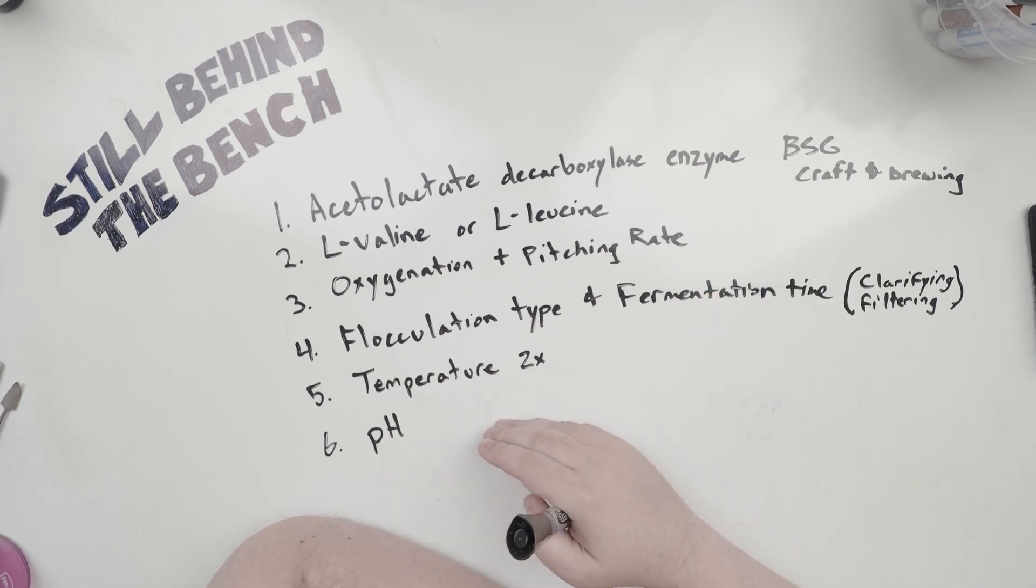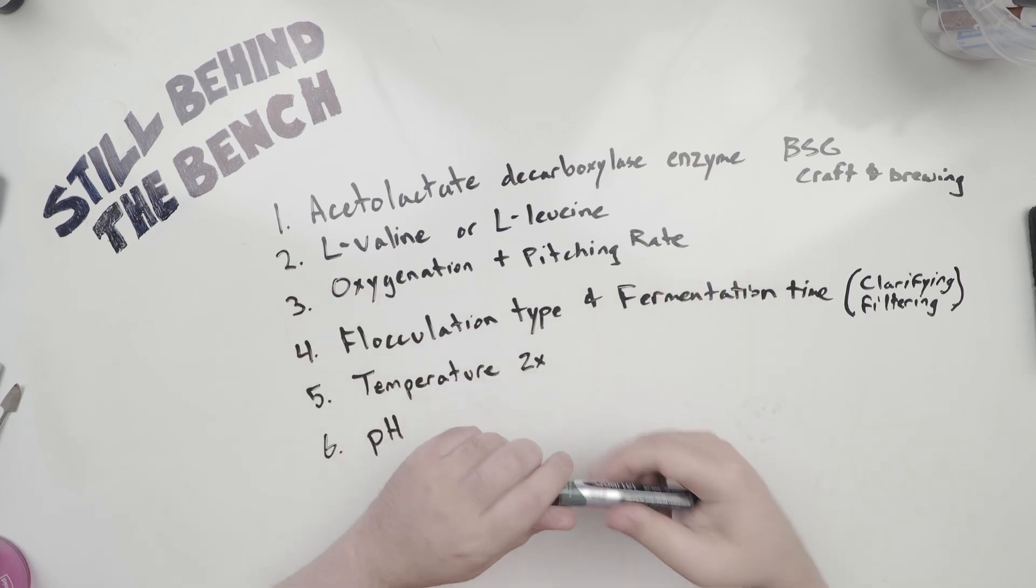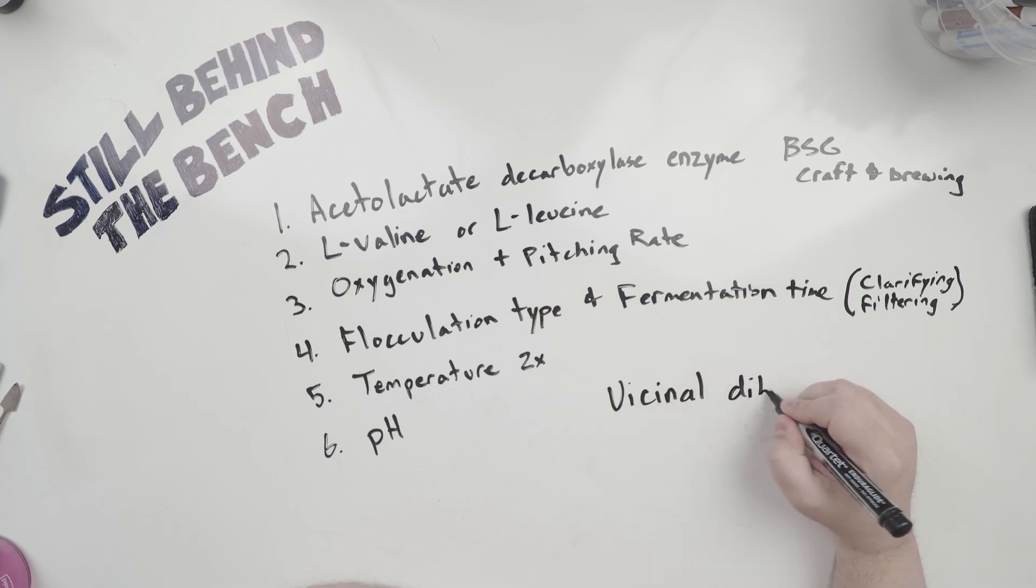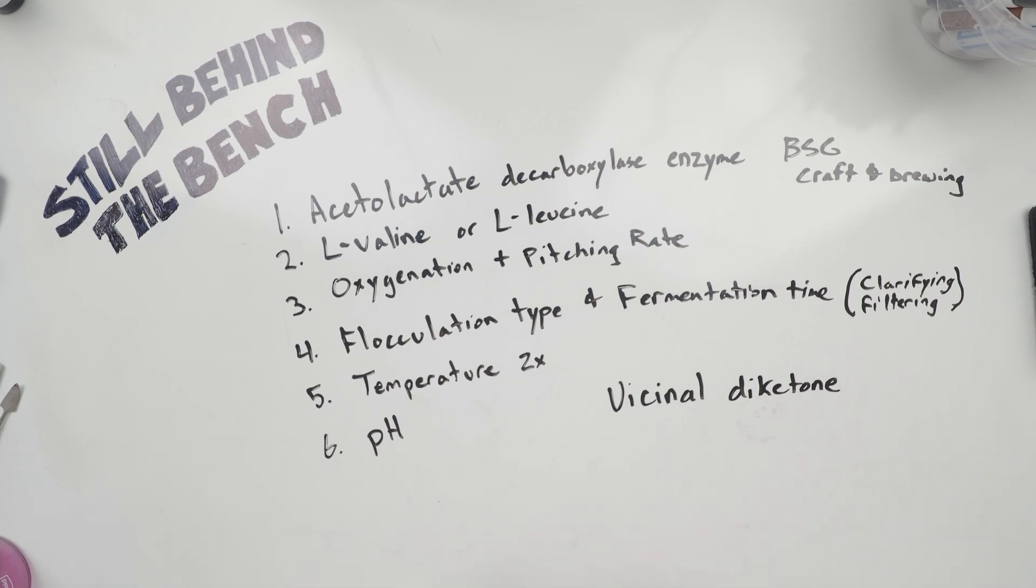Now pH is actually one of the easier things to explain in a sort of hand-wavy way, because I couldn't find the reason why pH plays a role, but the simple truth of it seems to be that diketones, of which diacetyl is, so diacetyl is called a vicinal diketone. And what that means is adjacent ketones. So vicinal just means adjacent, and here I'll draw it out again.